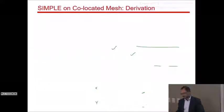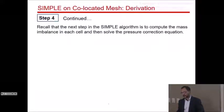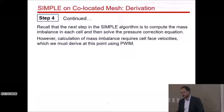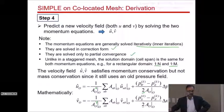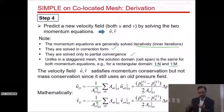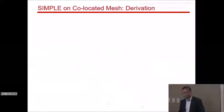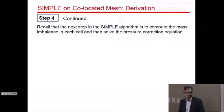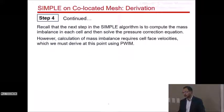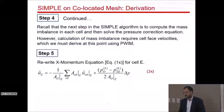To calculate the mass imbalance, we need cell face velocities. We cannot use standard distance-weighted interpolation for cell face velocities. This is where we digress into a new derivation. Here is the x-momentum equation (equation 1x) written for cell 0. We then write the same equation for cell E, the eastern cell — equation 2x.